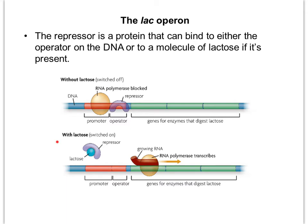When lactose is present, it binds to the repressor and the repressor is no longer bound to the operator. That means RNA polymerase can now transcribe those genes, and they can eventually get translated into proteins, which are enzymes to digest the lactose.